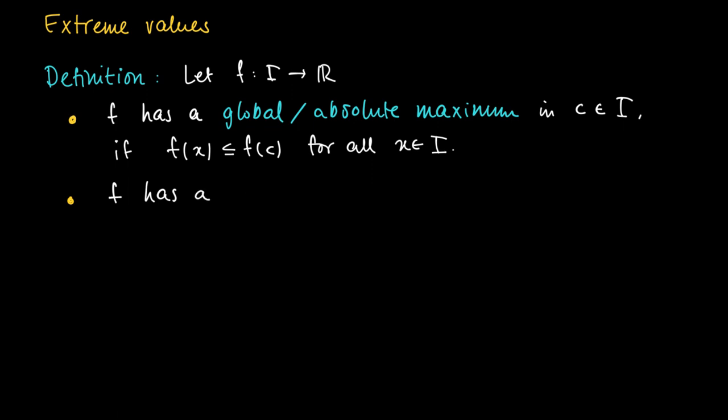Similarly, we define a global or absolute minimum in some c in the interval, if it holds that f(x) is at least f(c) for all x in I. So f(c) is the minimum value of the function on its domain I.